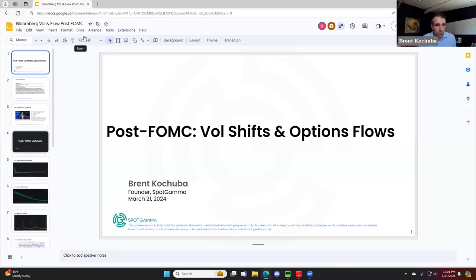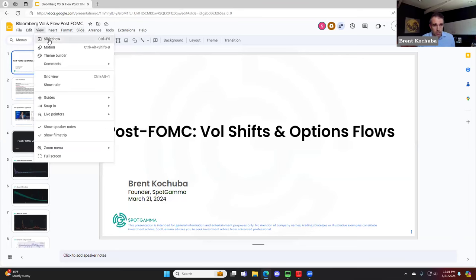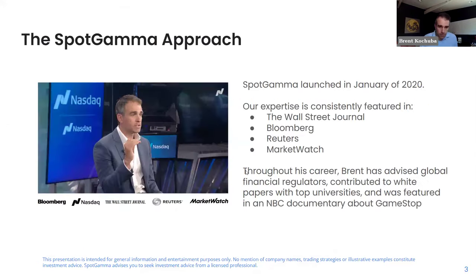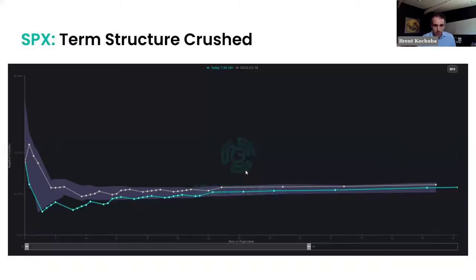I want to start first with the volatility landscape and then dig into some of the hero flows we're seeing today. There are some very interesting flows taking place that I think should signal some longer-term trends that we see coming out of FOMC. Let's start with the volatility landscape after FOMC.